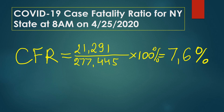Let's calculate the case fatality ratio for New York State. CFR: number of deaths, 21,291, divided by number of confirmed cases, which is 277,445, which gives us the case fatality ratio for New York State of 7.6%.